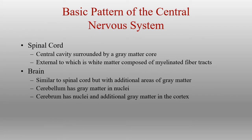When we look at the spinal cord and the brain, we have some distinctive areas we can see. The spinal cord makes it very easy to see the difference between white matter and gray matter: the white matter is all on the outside, and the gray matter is on the inside, making up a kind of H pattern or butterfly pattern.